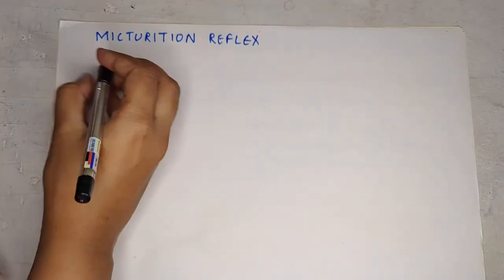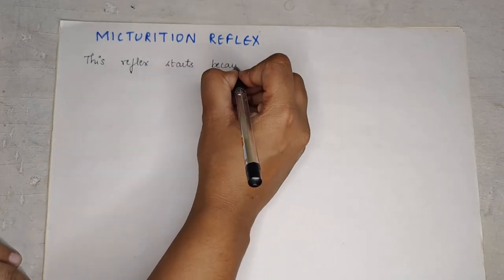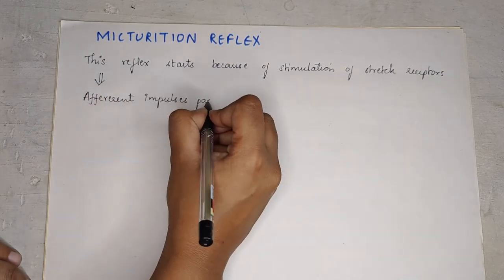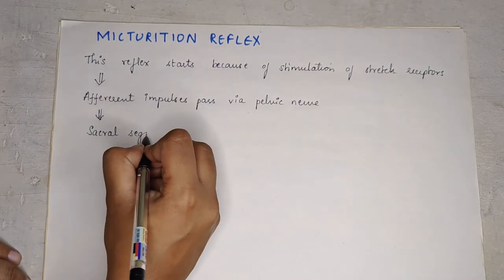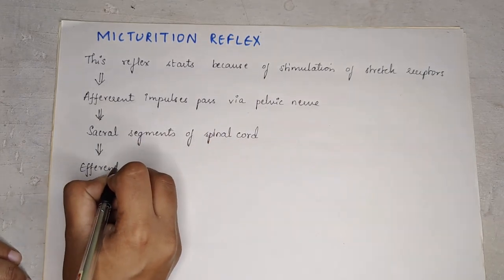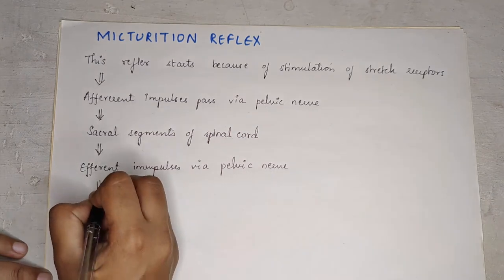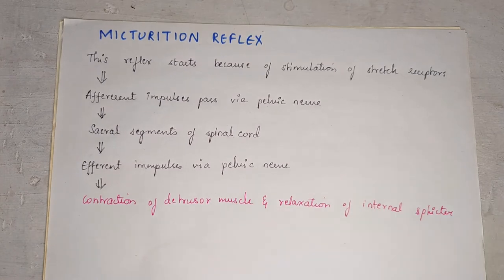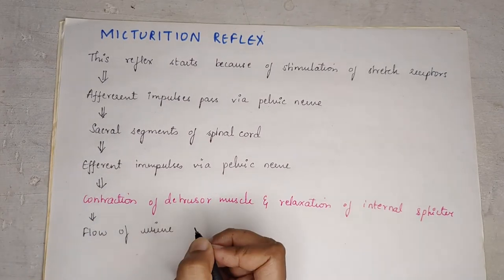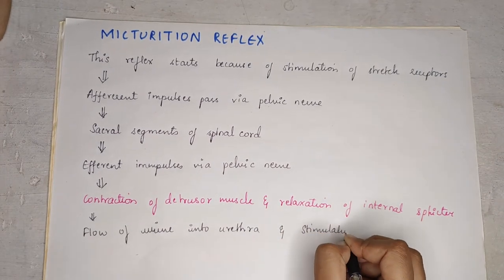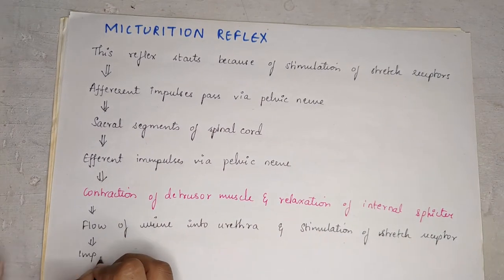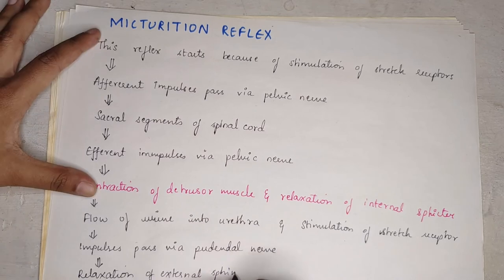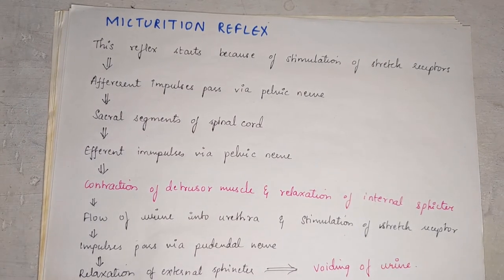Now we come to the main part: the micturition reflex. This reflex starts because of stimulation of stretch receptors. Afferent impulses pass via the pelvic nerve to the sacral segments of the spinal cord, and efferent impulses pass back via the pelvic nerve. This leads to contraction of the detrusor muscle and relaxation of the internal sphincter, causing flow of urine into the urethra, which stimulates stretch receptors again. Impulses then pass via the pudendal nerve, causing relaxation of the external sphincter and voiding of urine.